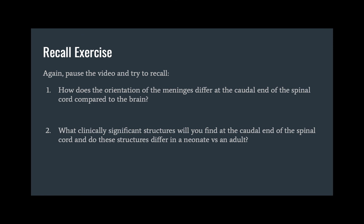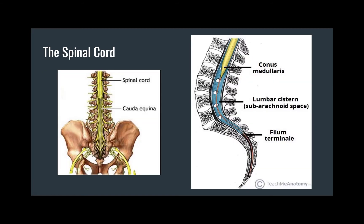Take a moment to pause the video and try to recall: one, how does the orientation of the meninges differ at the caudal end of the spinal cord compared to the brain, and two, what clinically significant structures are found at the caudal end of the spinal cord and do these structures differ in a neonate versus an adult. The first term to define is the conus medullaris — this is the tapered end of the spinal cord. Posterior to it is an extension of nerve fibers that innervate the lower extremities called the cauda equina.